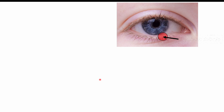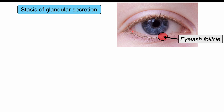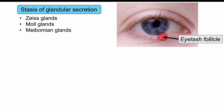A stye is going to occur at an eyelash follicle or at the margin of the eyelid. There's going to be a stasis of glandular secretion — those little glands on the margin of the eyelid become clogged or blocked. The different types of glands that can be affected include Zeiss glands, Moll glands, and meibomian glands, each of which secretes different products. Zeiss glands secrete sebum and antiseptic products that help fight bacteria.